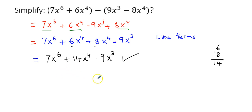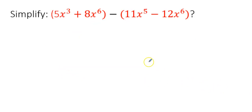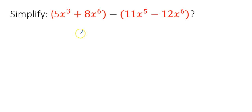Now try to simplify this one: 5x cubed plus 8x to the power of 6 minus 11x to the power of 5 minus 12x to the power of 6. Follow the same steps — remove the parentheses, bring down the first expression, change the signs of the second expression because of subtraction, then group the like terms and simplify.